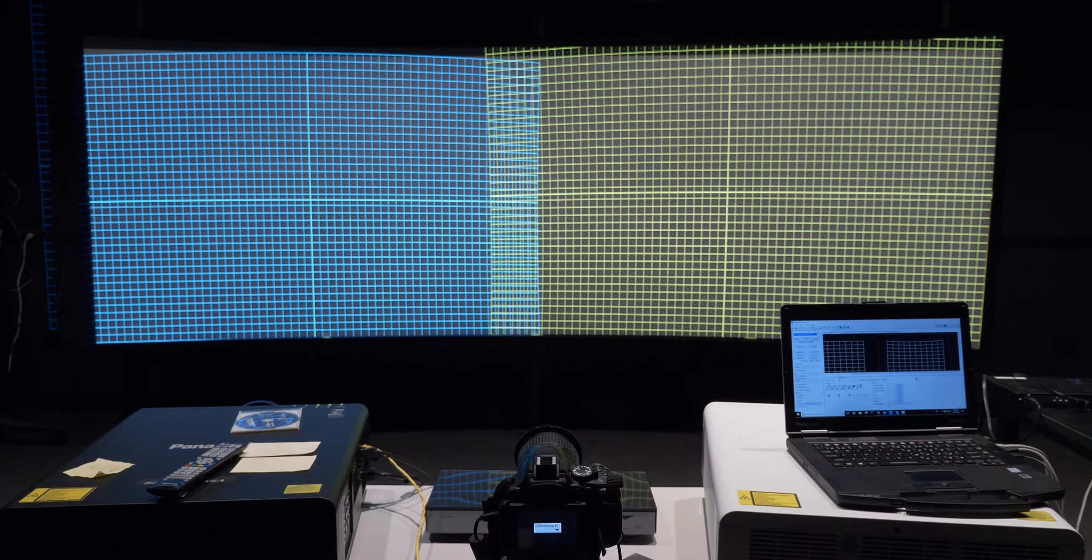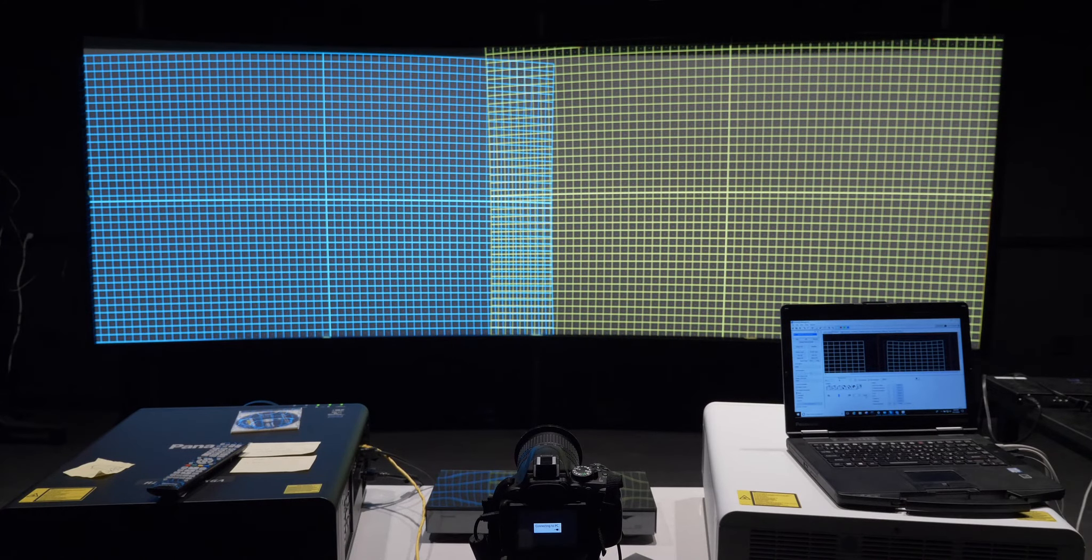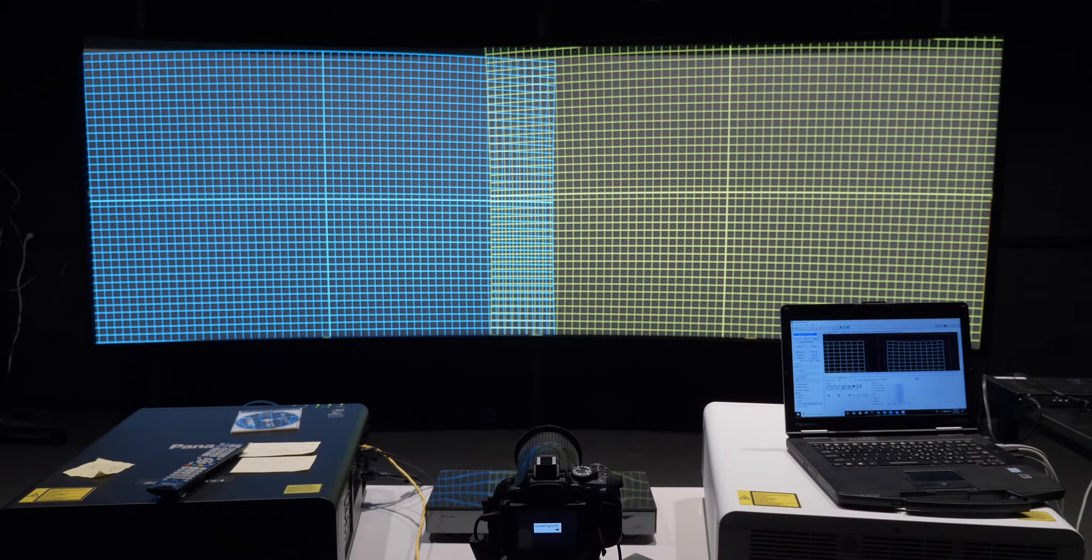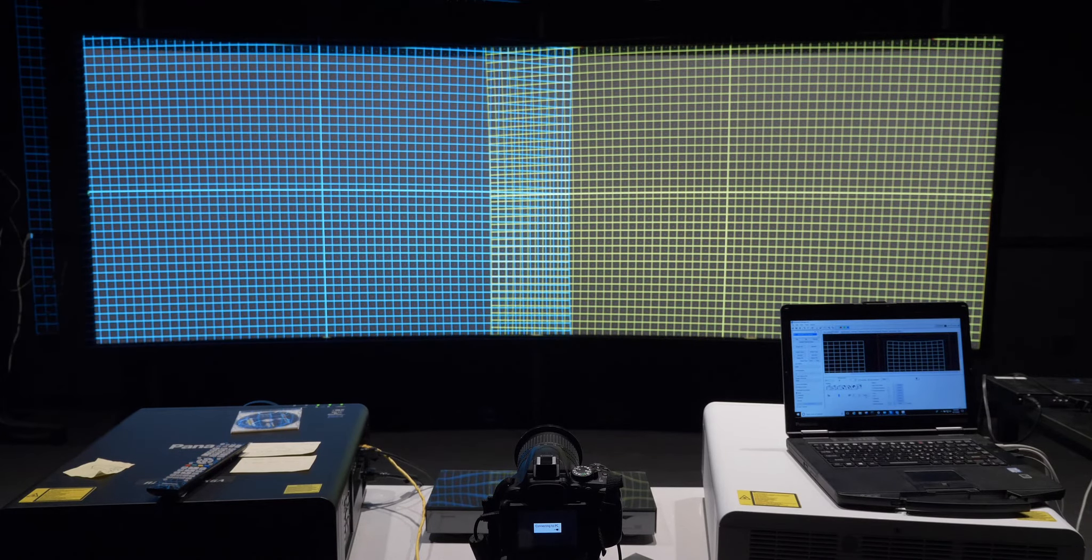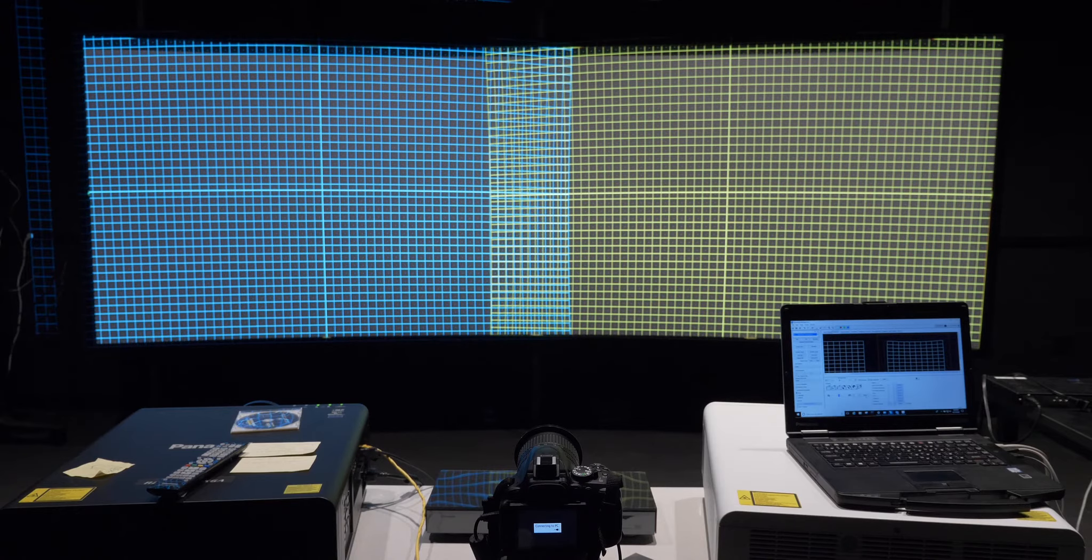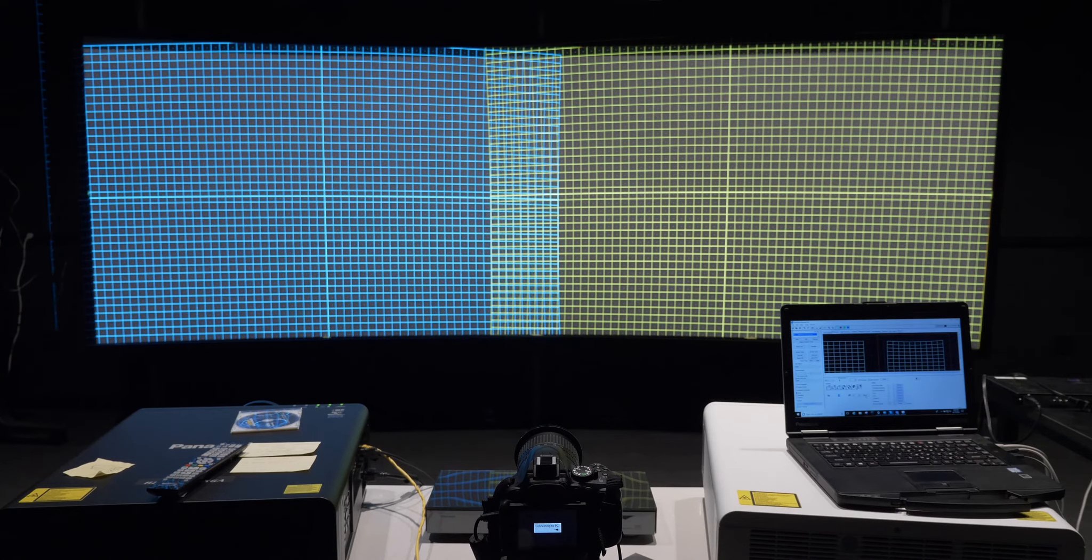Use horizontal and vertical lens shifting whenever possible to set up your projectors, instead of tilting them. Geometric correction will compensate for large amounts of overshoot and error, but when used excessively, it can introduce visible artifacts. The more symmetric your physical layout, the less correction is needed.